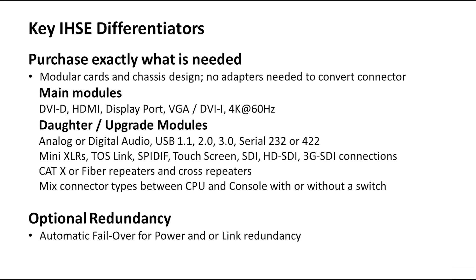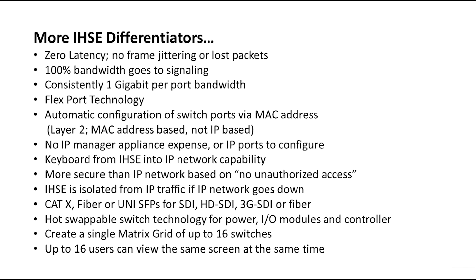We offer a cat-x or fiber repeater solution and cross-repeaters. We can mix connector types between the CPU and console with or without a switch — for example, a CPU that is DVI-D yet the console workstation is HDMI can be connected directly via point-to-point or through a switch. IHSE offers optional redundancy and automatic failover for power and/or data link. Zero latency, no frame jitters or lost packets. 100% bandwidth goes to signaling, consistently one gigabit per port bandwidth. Flexport technology. Automatic configuration of switch ports via MAC address.